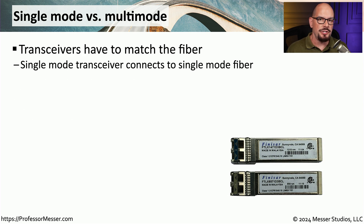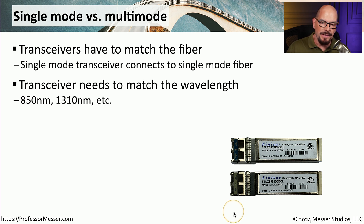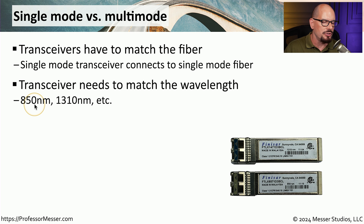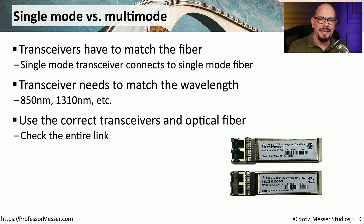You might also run into hardware issues when working with transceivers. Transceivers provide a modular connection for Ethernet devices, but you have to be sure you're using the right transceiver for the right connection. For example, if you're plugging in a fiber transceiver, you have to make sure the transceiver matches the type of fiber you're connecting. There's usually a wavelength mark on the transceiver — it might show 850 nanometers or 1310 nanometers — and all of these need to match throughout the entire link based on the fiber you're using.